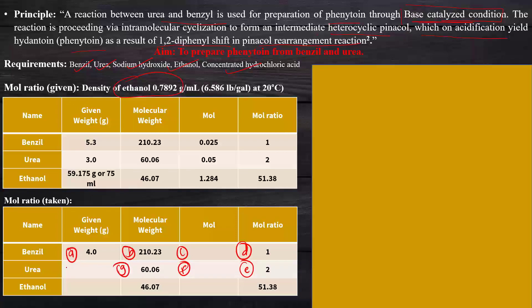First, we find C, which is the moles of benzil: weight of benzil divided by molecular weight of benzil. The weight of benzil is 4 grams and the molecular weight is 210.23 grams per mole. Ultimately, we get the moles of benzil as 0.019 moles.